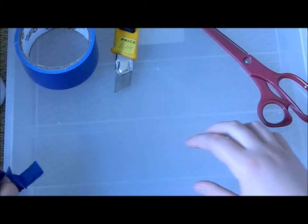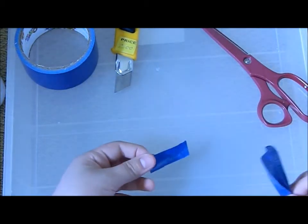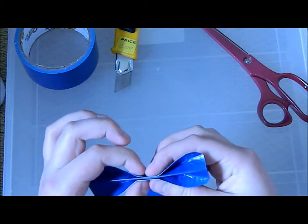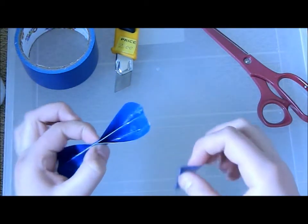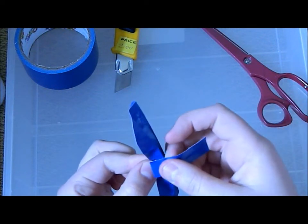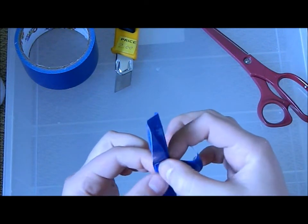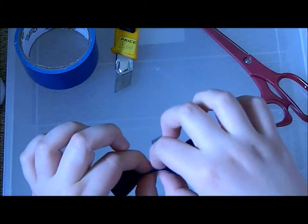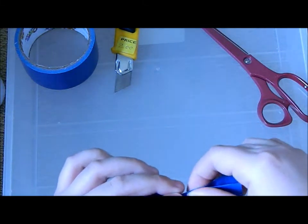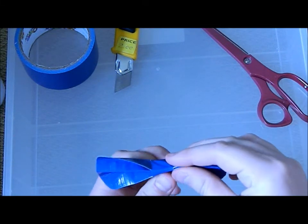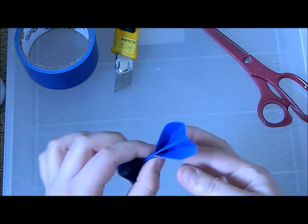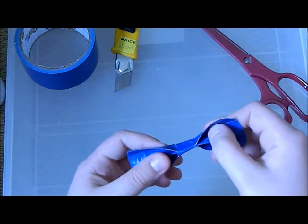This is where your piece of duct tape like this comes into effect. So I'm going to keep pinching the middle and then wrap this little piece of duct tape around the middle. Click it, then your duct tape bow is done.